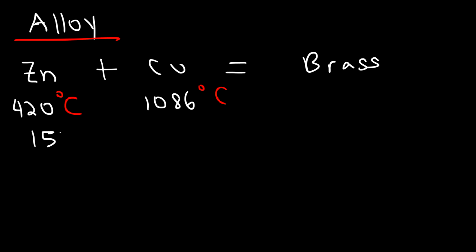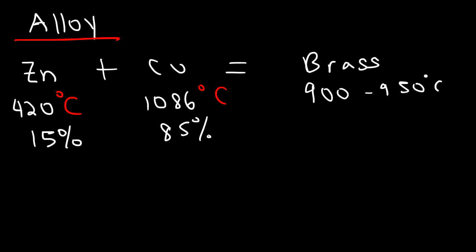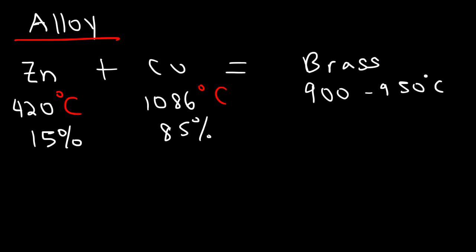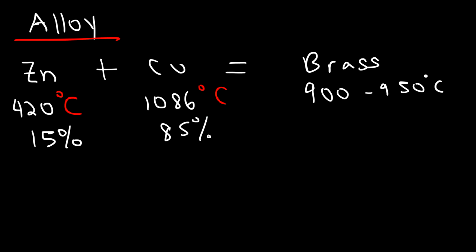It turns out the melting point of brass is somewhere in between these two numbers. If we have a mixture of 15% zinc and 85% copper, the melting point of brass will be somewhere around 900 to 950 degrees Celsius. Notice that the melting point of brass is closer to the melting point of copper compared to zinc. That's because this particular alloy is composed more of copper and less of zinc.